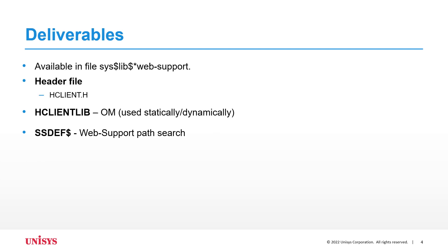The product's object module and header files are available in the file sys$lib$star web support. The declaration of REST APIs and its data definitions are available in the header file hclient.h. You can link the application statically or dynamically with the web support library.